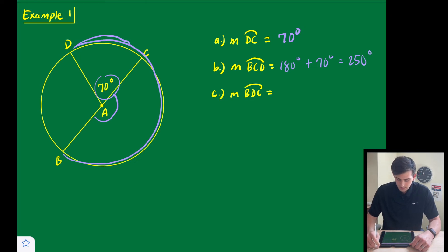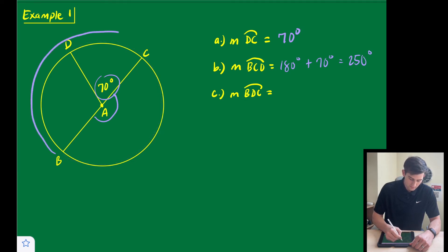And our last one is the major arc BDC. So BDC, if we erase these here, we would be going this way, and that is a semicircle, so that would be 180 degrees.